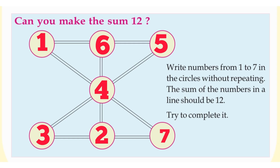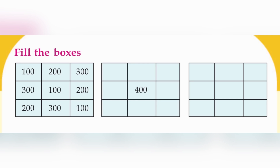All of you open the next page number 20. Fill the boxes. Here you can see the first box is completed. The first line: 100, 200, 300. The second line: 300, 100, 200. And the third line: 200, 300, 100. Look at the box carefully — the first line is in a pattern: 100, 200, 300.